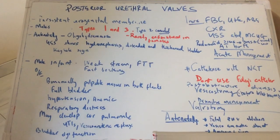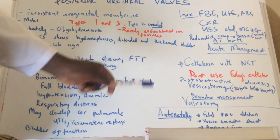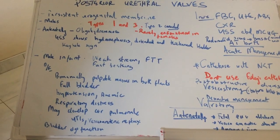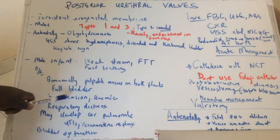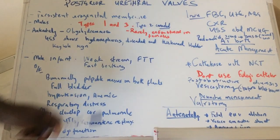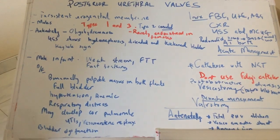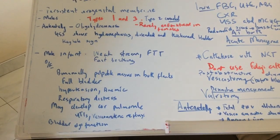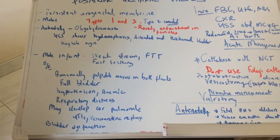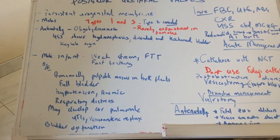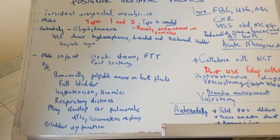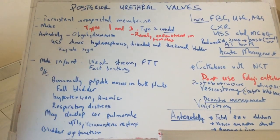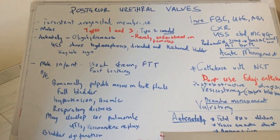On examination, you may find bimanually palpable masses in both flanks — these are the kidneys; you can actually feel them. The bladder will be full. Blood pressure will be high for age, and they can be anemic, so they may actually need blood transfusion. They may have respiratory distress if they have pulmonary hypoplasia, and signs of heart failure depending on time of presentation — heart failure can be secondary to pulmonary hypoplasia. They have a tendency to present with urinary tract infections, can also have vesico-ureteric reflux, and the bladder may be dysfunctional.